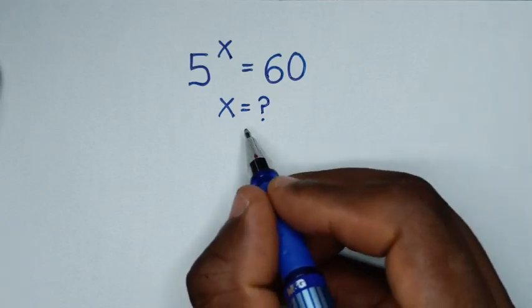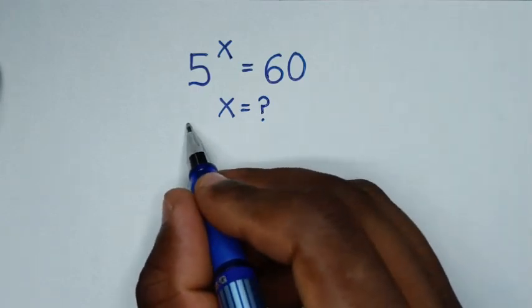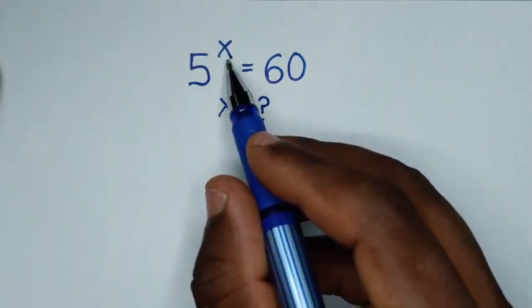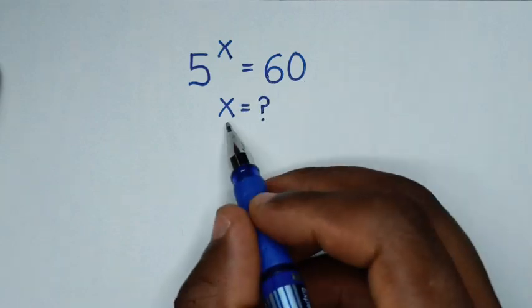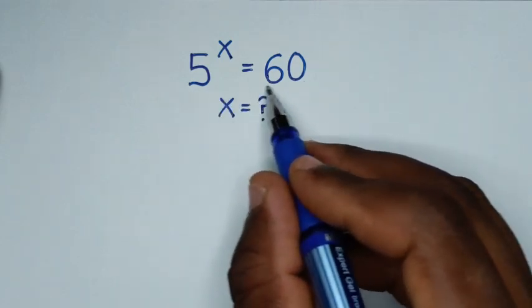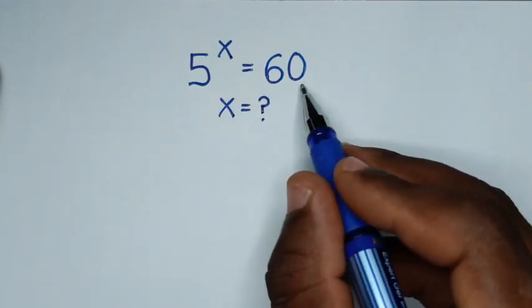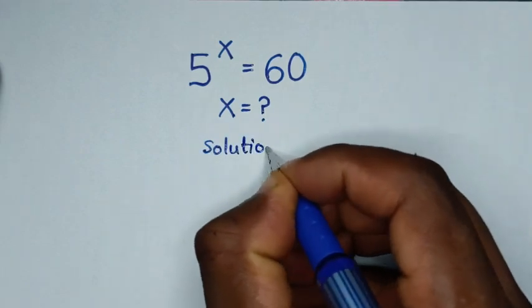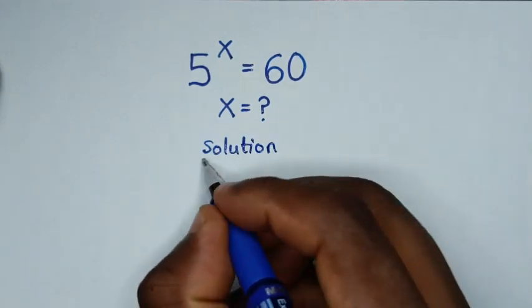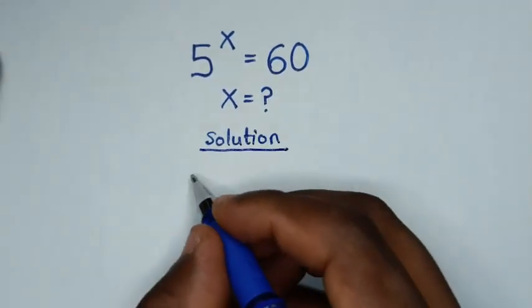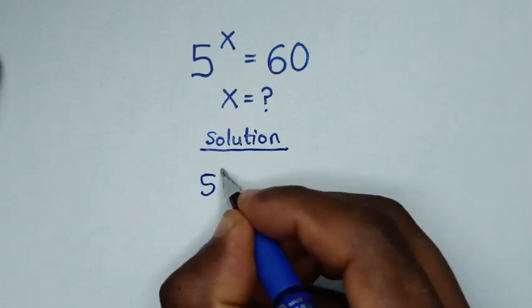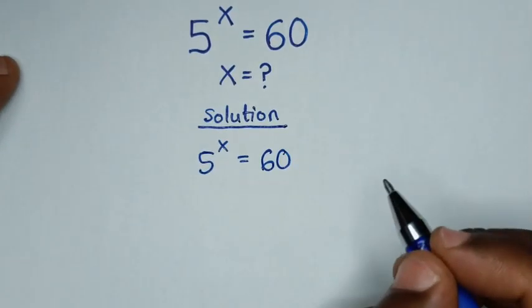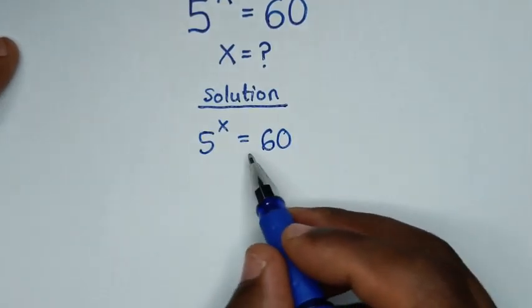Hello, you are welcome to solve this math problem: 5 to the power of x is equal to 60, to find the value of x from this equation. Now, solution. From our problem, which is 5 power of x is equal to 60, in the first step we'll apply log on both sides.